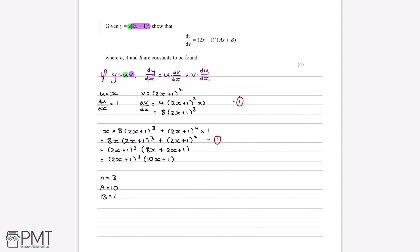That's our second mark, and this is an answer mark. We get our third method mark from taking out this common factor of 2x plus 1 to the power of 3. And finally, our last mark comes from getting the answer, so getting what n, a, and b all are.